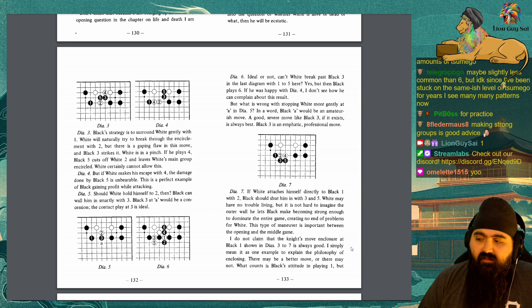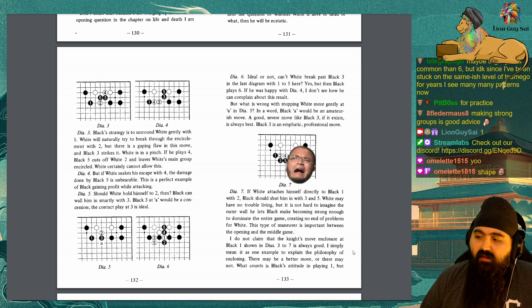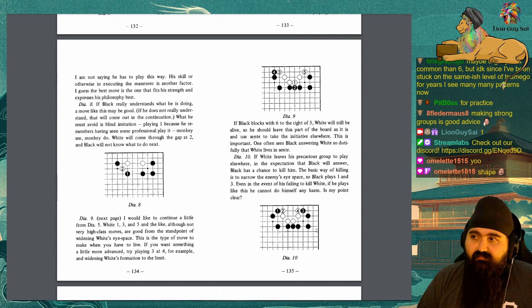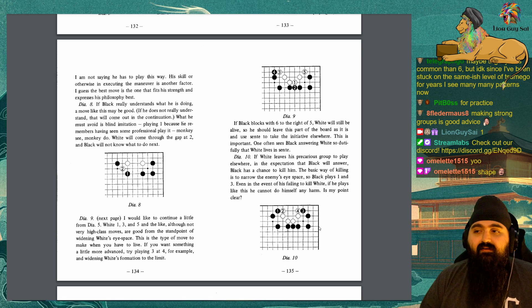I do not claim that the Knight's move enclosure at Black 1, shown in Diagrams 3 to 7, is always good. I simply mean it is one example to explain the philosophy of enclosing. There may be a better move, or there may not. What counts is Black's attitude in playing one? But I'm not saying he has to play this way. His skill or otherwise in executing the maneuver is another factor. I guess the best move is the one that fits his strength and expresses his philosophy best. Diagram 8: If Black really understands what he is doing, a move like this may be good. If he does not really understand, that will come out in the continuation. What he must avoid is blind imitation, playing one because he remembers having seen some professional play it. Monkey see, monkey do. White will come through the gap at 2, and Black will not know what to do next.